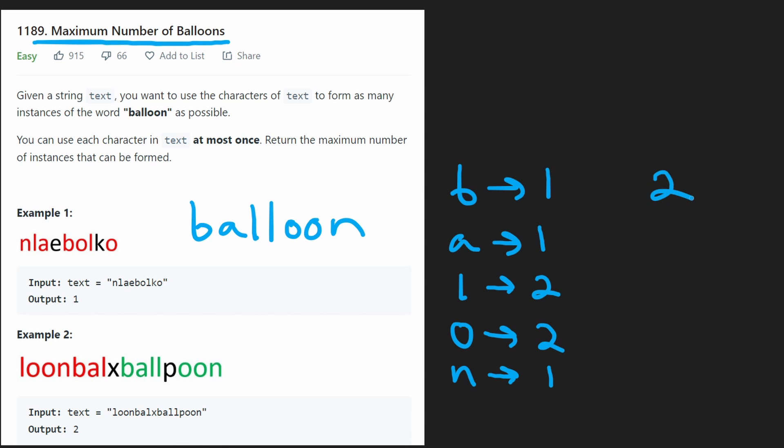If we had two B's, we know that we could create the word balloon at most two times, but maybe not even two times, depending on how many we have of the remaining characters. Similarly, if we had four L's, suppose we had four L's. That means we can create the word balloon at most two times, but maybe not even two times.